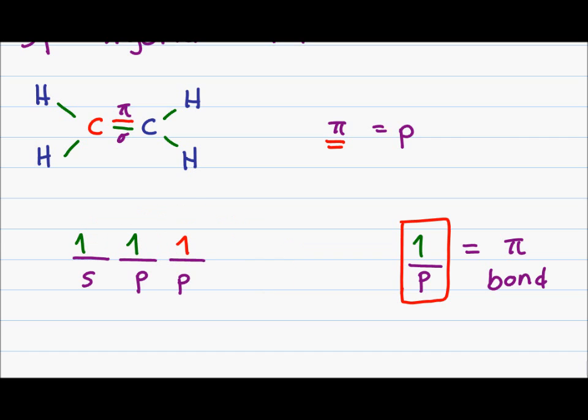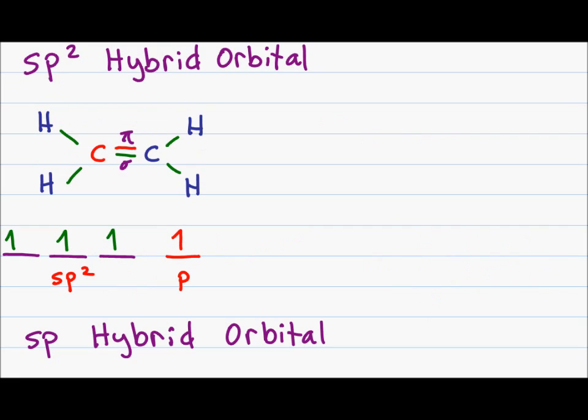And then I will take that 1 electron from the s orbital and move it over to the p orbital. This new hybridization made from 1s and 2p orbitals gives me the new sp2 hybrid orbital.